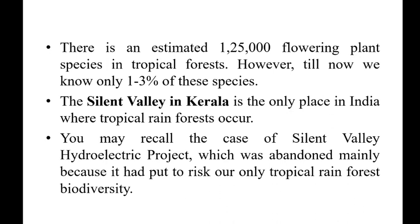However, till now we know only 1 to 3 percent of these species that have been scientifically named. In India, the Silent Valley in Kerala is the only place where tropical rainforest occurs. The Silent Valley hydroelectric project was abandoned mainly because it posed a high risk to the biodiversity distributed in that tropical rainforest.